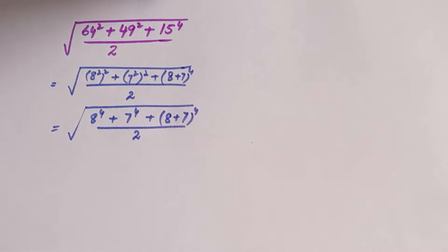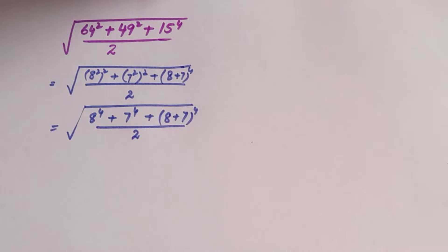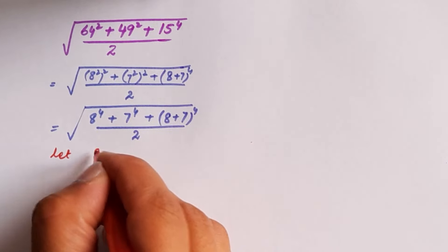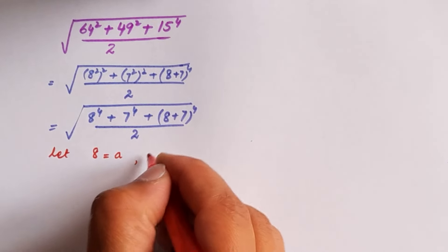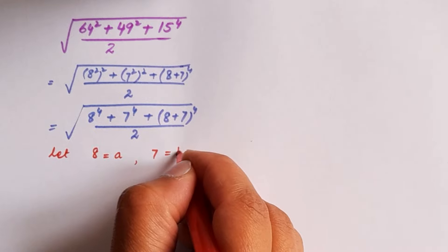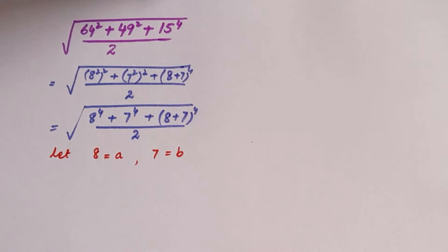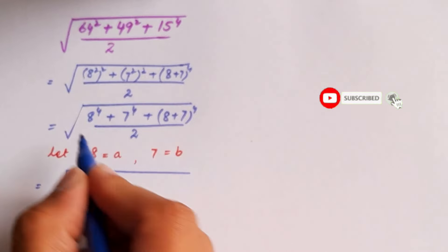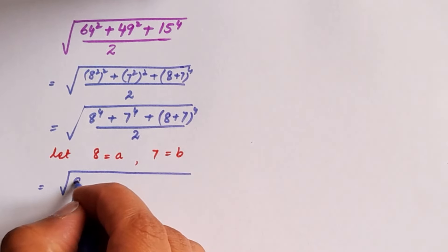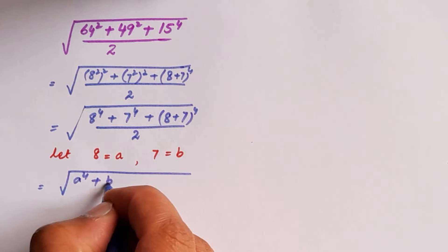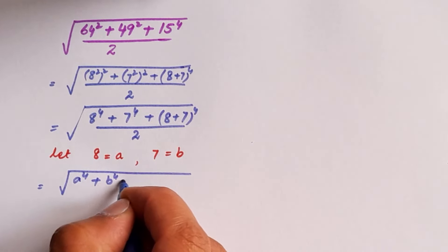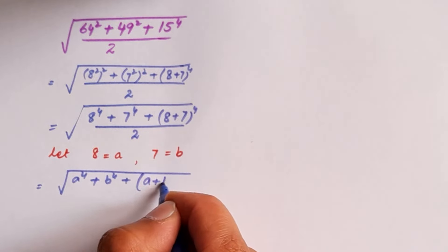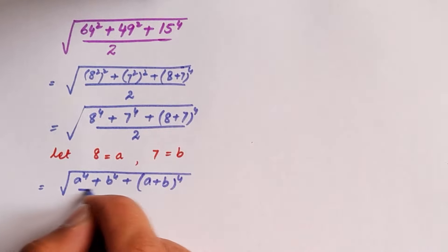Now we are going to let some values here. Let a = 8 and b = 7. Putting these values in the expression, we get the square root of a to the power 4 plus b to the power 4 plus (a + b) to the power 4, divided by 2.